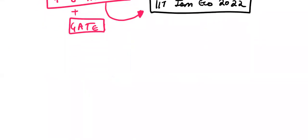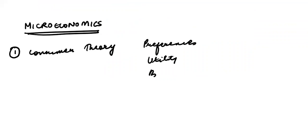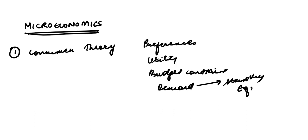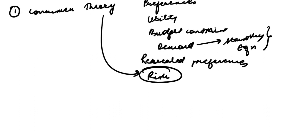The first subject asked majorly is microeconomics, which can be divided into six main parts. The first is consumer theory, covering topics like indifference curves, preferences, utility, budget constraint, choice, and demand. We will also cover the Slutsky equation, revealed preferences, and risk — expect one to two questions on risk every year.